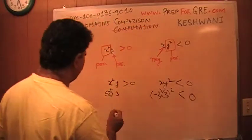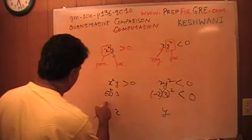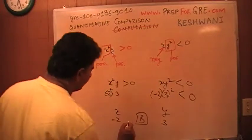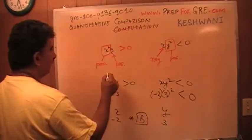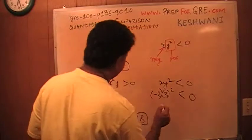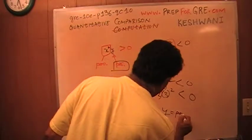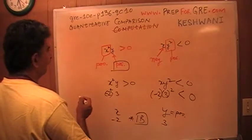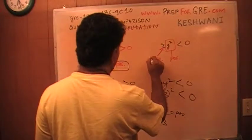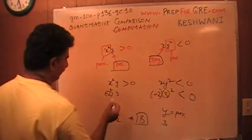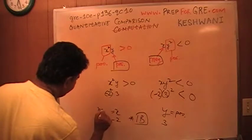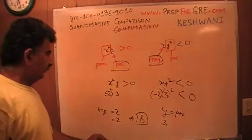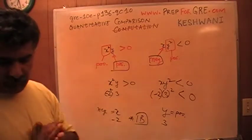So as you can see, we are asked to compare x versus y. x works out to be negative 2, y works out to be 3. The answer is B — as we had already determined: y is positive and x is negative. x squared is positive, but x itself is negative. You can plug in numbers, or you can just think logically about it — and it makes sense.